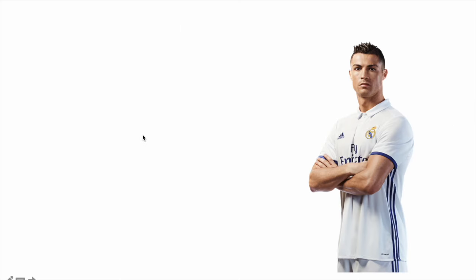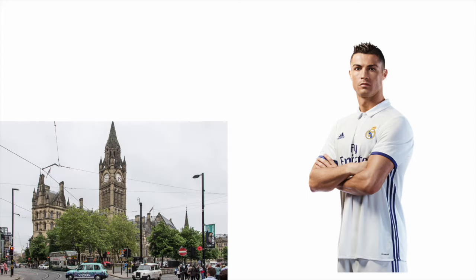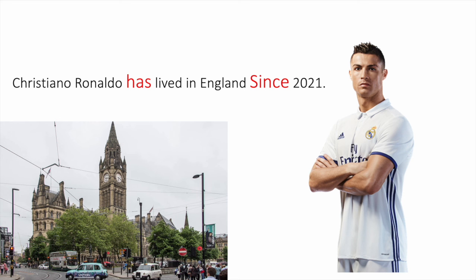But how about Cristiano Ronaldo? He's alive, right? Where does he live right now? Cristiano Ronaldo has lived in England since 2021. It started in 2021 and he is still living there. Keep in mind: for present perfect, for 'he', 'she', and 'it' you need to use 'has' plus the past participle. For time, use 'since' plus the year — meaning from that time it started and is still continuing.